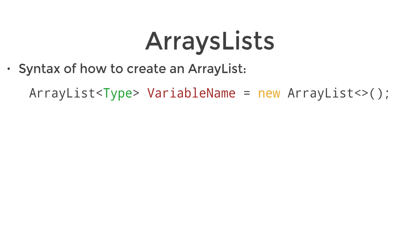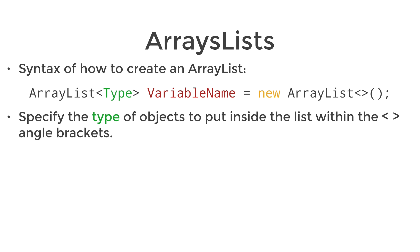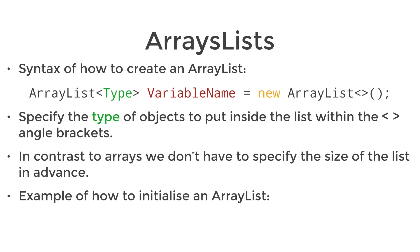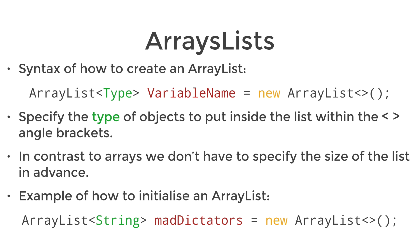Here is the syntax for creating an array list: ArrayList angle brackets, the type of data you're going to put into the array list, then the variable name equals new ArrayList. In contrast to arrays, we don't have to specify the size of the array list in advance. So here's an example: ArrayList angle brackets String madDictators equals new ArrayList.